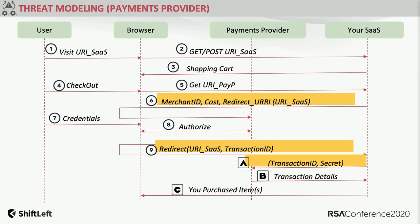This also played out with a payments provider. Looking at the parts highlighted in yellow: the typical consumer visits a URI of your web service, adds items to the shopping cart, and at the payments junction they are redirected to Stripe or PayPal. As a consequence of this redirect, there was merchant ID, cost, and redirect URI all exposed by the service leveraging PayPal. These critical parameters can be manipulated in creative ways. PayPal did a good job, but it was the company using PayPal that exposed aspects — merchant ID, transaction ID, token — that should not have been exposed.